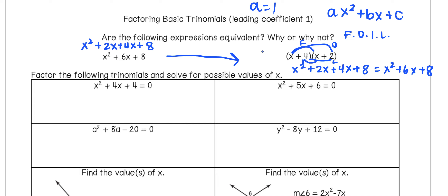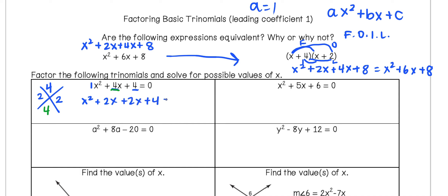Let's factor the trinomial x squared plus 4x plus 4 using this method. We want to turn it into two binomials. Our leading coefficient is 1 and our constant c is 4, so the product is 1 times 4 equals 4. The middle coefficient b is the number we want to add to. So we need two numbers that multiply to 4 and add to 4: 2 times 2 is 4 and 2 plus 2 is also 4. We rewrite as x squared plus 2x plus 2x plus 4, set equal to zero.